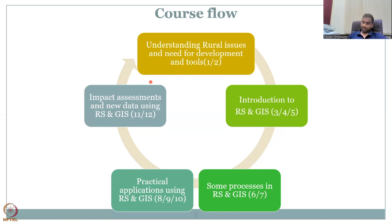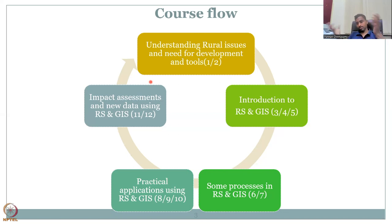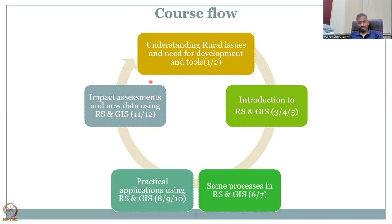In weeks eleven and twelve, we will take a particular scheme — for example, MGNREGA, IWMP, the housing scheme, rural electrification, or Jal Jeevan Mission — and do a small assessment. For example, taking the district boundary of Tiruchirappalli in Tamil Nadu and assessing MGNREGA's impact there. Another person can do it for a district in Kashmir or Rajasthan. The steps are the same because the data covers all of India.